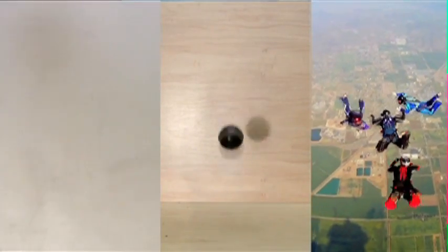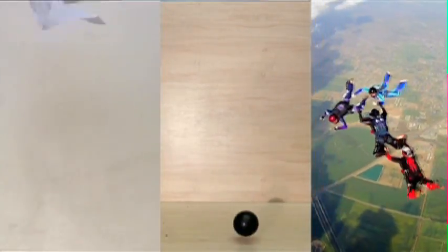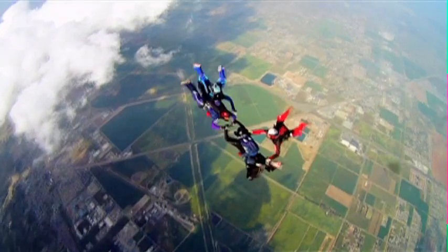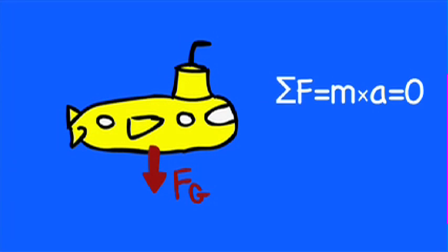We know that objects fall towards the earth because gravity acts on them, but if gravity acts on everything, why doesn't everything sink? Imagine a submarine that is stationary underwater. We know gravity is acting on it, but the sub isn't sinking, so there must be a force opposing gravity. We call this force buoyancy. In this video we will examine buoyancy and why some things float while others don't.